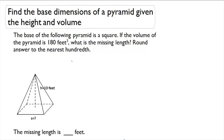Next, we're going to find the base dimensions of a pyramid given the height and the volume. So it's just another example of us working backwards. Let's recall that the volume formula for a pyramid is 1 third times capital B times H, where B stands for the base area.